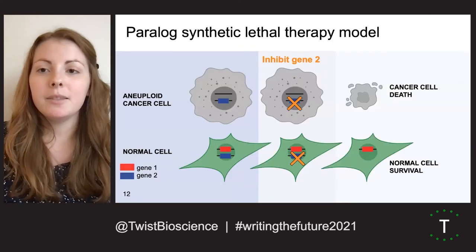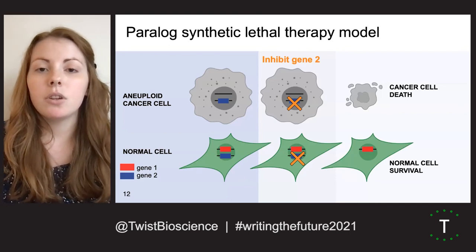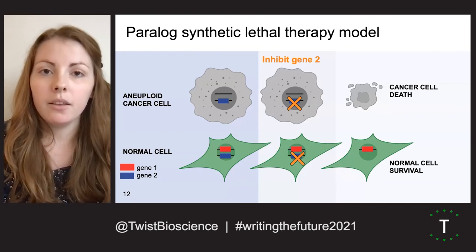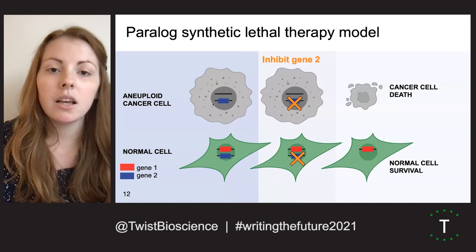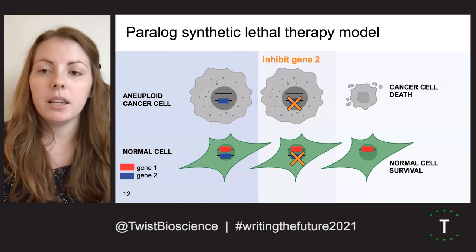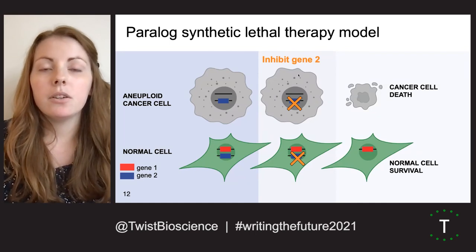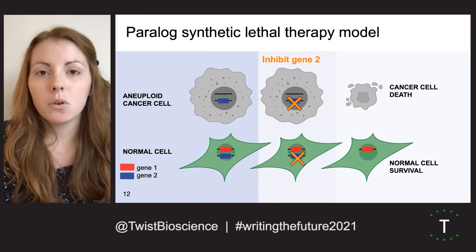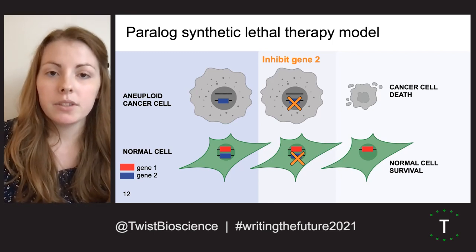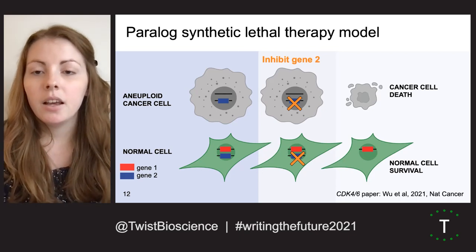This leads me to our model of how we can apply this for synthetic lethal therapy. We want to look for synthetic lethal paralog pairs where one member is frequently lost in cancer through recurrent deletions or inactivating mutations, and then target the remaining family member with an inhibitor. Many inhibitors will target both paralogs, but there is still likely to be a therapeutic window where cancer cells are more sensitive to the drug than normal cells. This approach has been shown to work for CDK4 and 6 in a recent study.